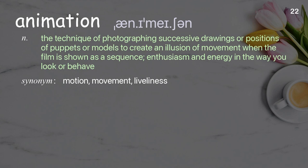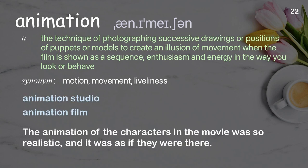Animation: The technique of photographing successive drawings or positions of puppets or models to create an illusion of movement when the film is shown as a sequence; enthusiasm and energy in the way you look or behave. Examples: Animation studio. Animation film. The animation of the characters in the movie was so realistic, it was as if they were there.